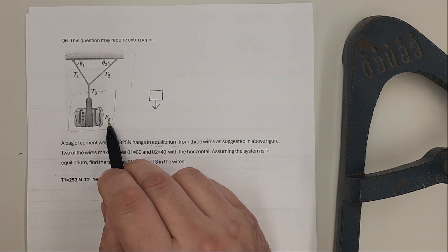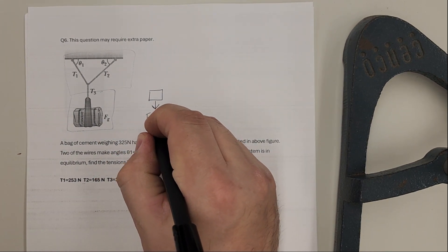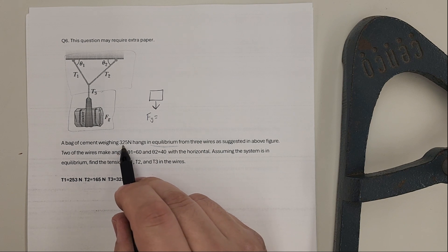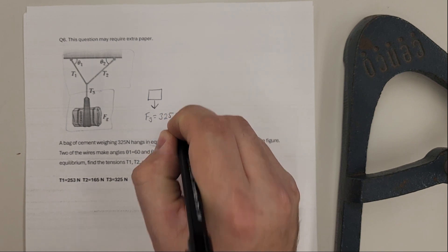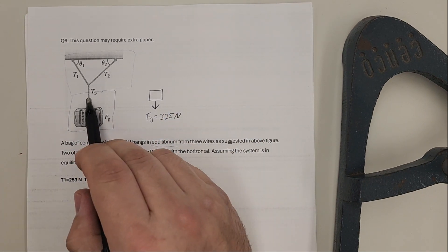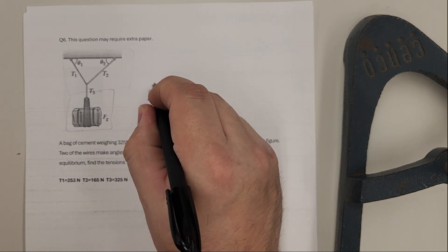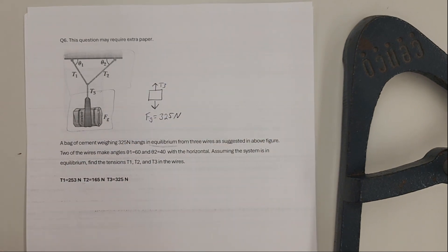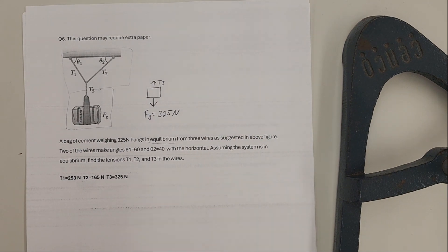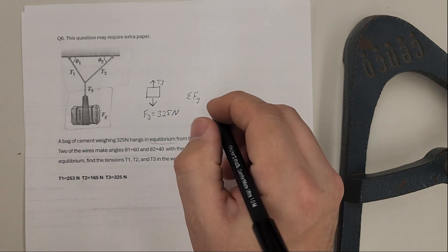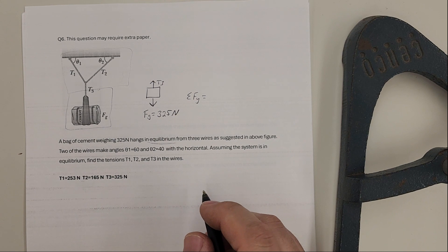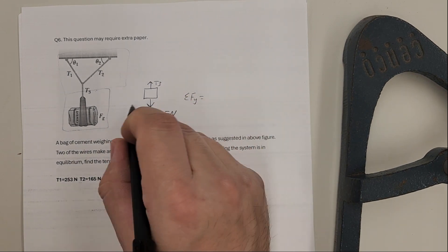We know that has a downward force of FG, the force of gravity pulling straight down on the bag, and it tells us it has the weight of 325 newtons. T3 is the only rope that is attached to that, so T3 has to be pointing up for it to be in equilibrium. From here, if we're just looking at this, it's only the sum of the forces in the y direction because there's no x.